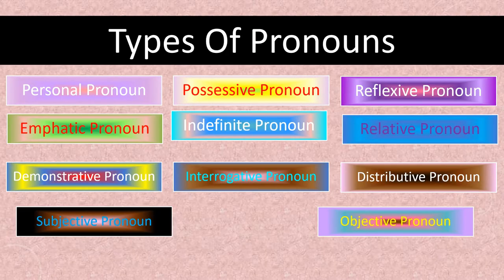Now we are going to the types of pronouns. Since this is for primary children, I have given only limited types. They are: personal pronoun, possessive pronoun, reflexive pronoun, emphatic pronoun, indefinite pronoun, relative pronoun, demonstrative pronoun, interrogative pronoun, distributive pronoun, and subject and object pronouns.